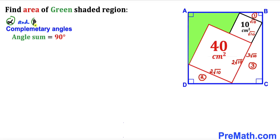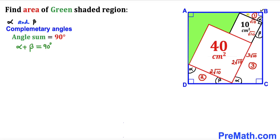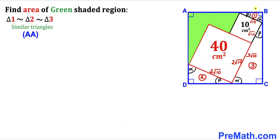Let's assume that alpha and beta are two complementary angles — that is, alpha + beta = 90°. This angle is alpha, and since we have a 90° corner, the adjacent angle must be beta. Applying this reasoning around the squares, we can identify corresponding alpha and beta angles at each triangle. We therefore conclude that all three triangles — triangle 1, triangle 2, and triangle 3 — are similar triangles by the Angle-Angle (AA) similarity theorem.